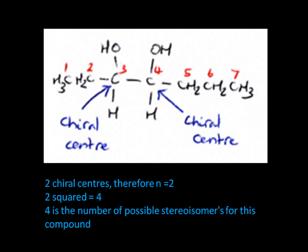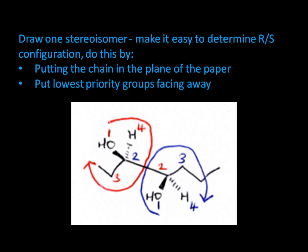Let's use an example to give a visual representation of what I have meant so far. Let's consider this molecule here, a diol with two chiral centres. There are therefore four stereoisomers of this compound. Let's draw one of the four stereoisomers in a way that allows us to determine R, S configuration easily. Put the carbon chain in the plane and the lowest priority group facing away at each chiral centre. And we end up with this.